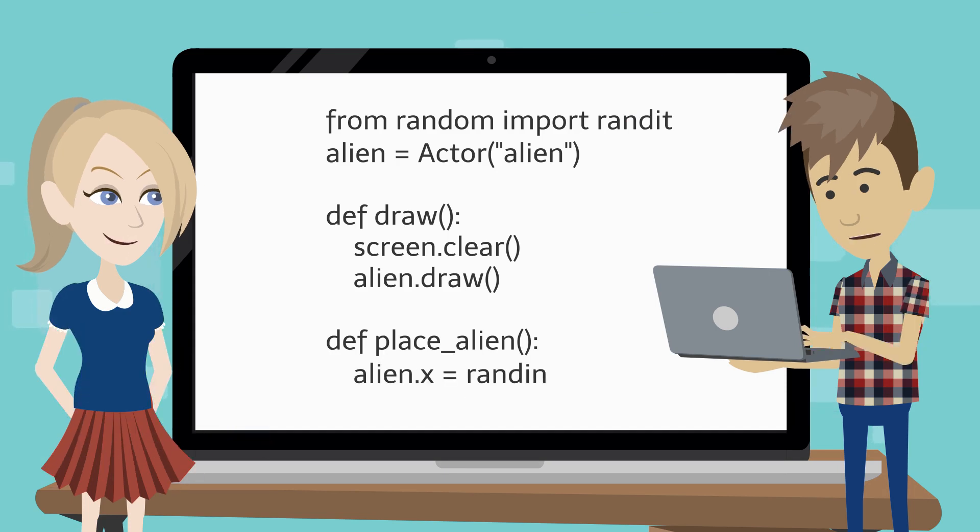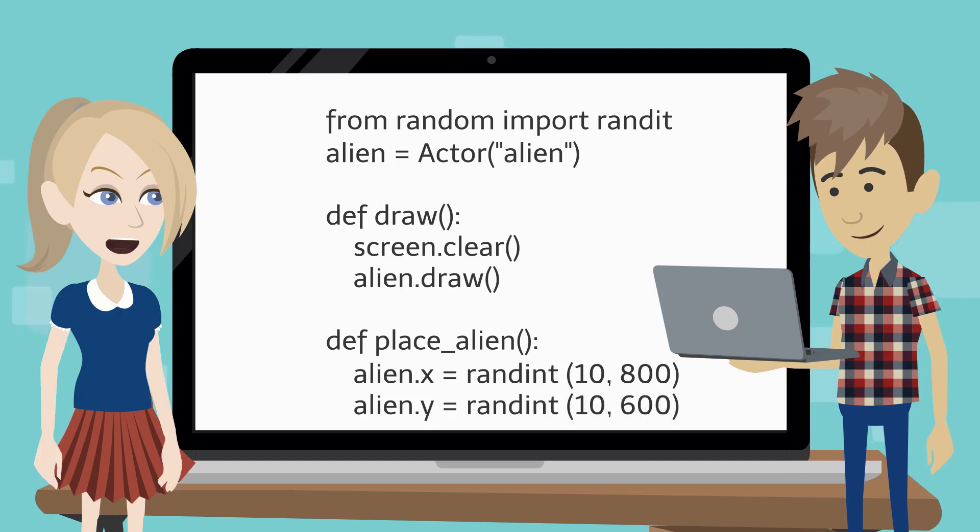No, not really. Change the code we typed like this. What is this code doing? The code will now use the randint function to pick a random number between 10 and 800 for the x-coordinate and a random number between 10 and 600 for the y-coordinate.